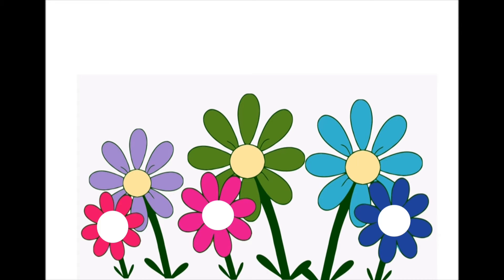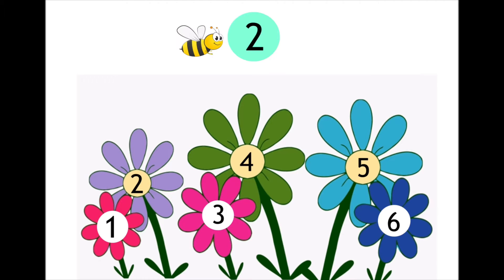One, two, three, four, five, six, seven, eight, nine, ten. Look guys, we have some spring flowers. Let's count how many flowers there are. One, two, three, four, five, six. There are six spring flowers. Oh look, a bee! Hello!